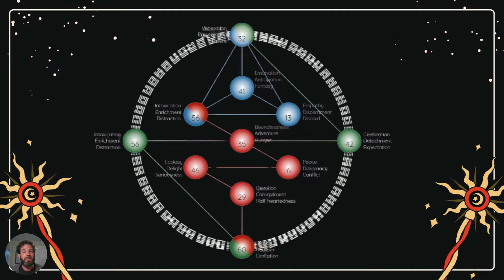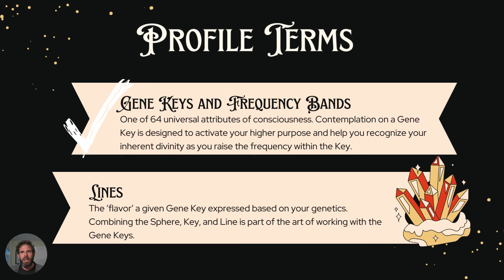Moving on now to the lines. The lines come from the hexagram structure of the I Ching, which is an ancient Chinese wisdom that the Gene Keys were built upon. The lines have different keynotes depending on which sphere we're in. However, it is always the same underlying energy. So once you start to understand the lines, you can apply them across all the different spheres without needing to know specifically what goes where.